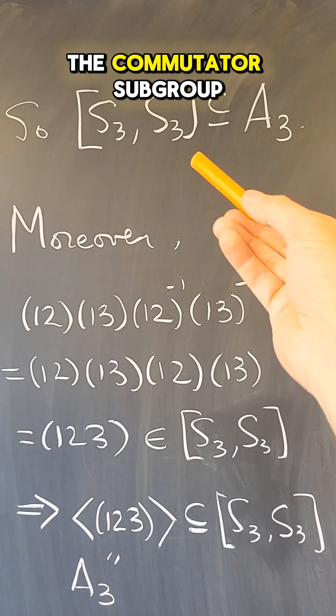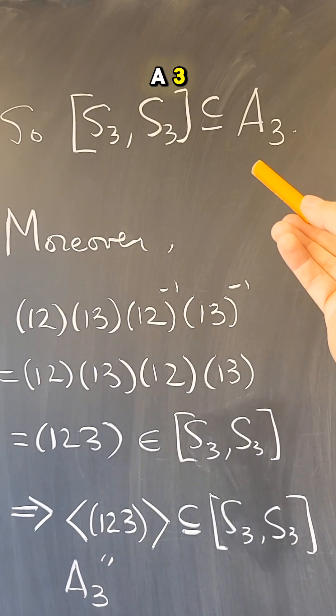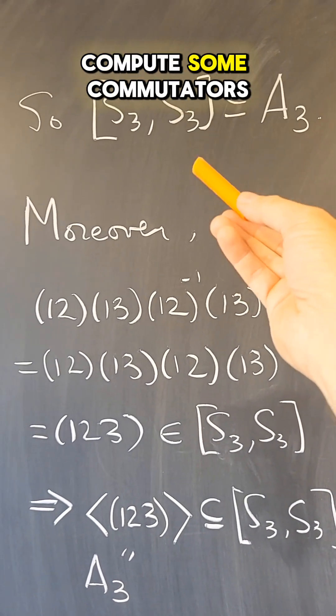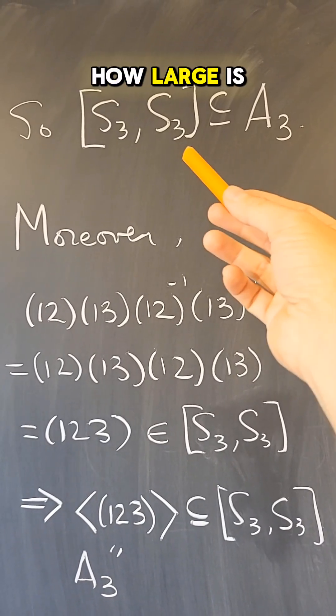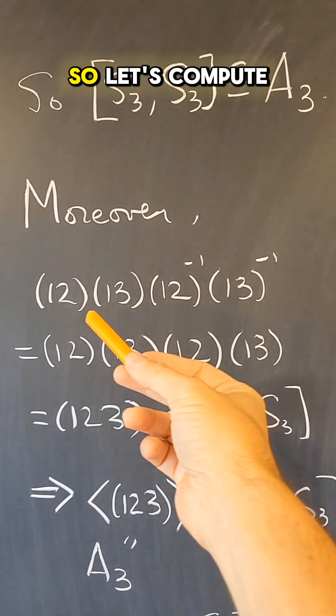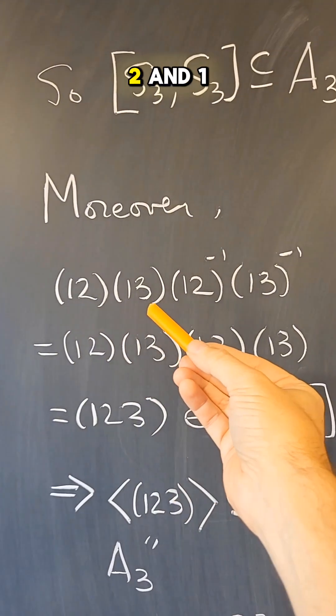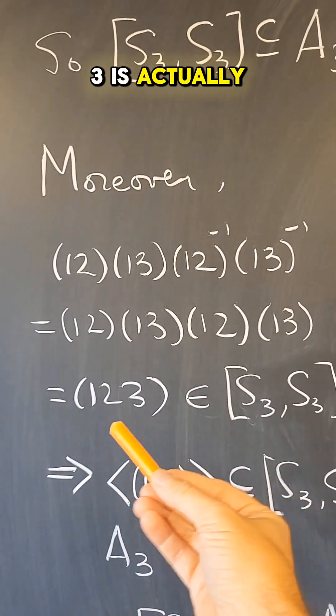That shows that the commutator subgroup is contained in A3. Now, is it equal to A3? Well, now I can compute some commutators just to see how large is it inside A3. So let's compute one commutator, for example, the commutator of (1,2) and (1,3) is actually (1,2,3).